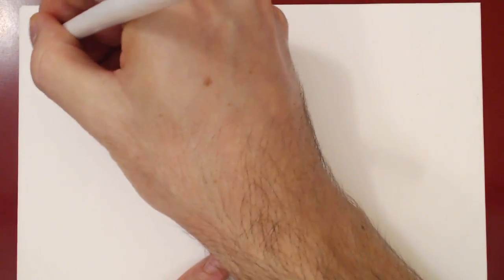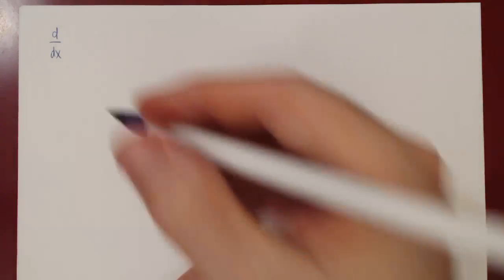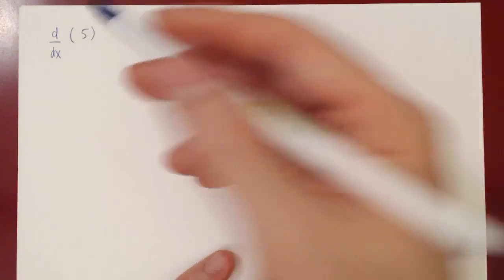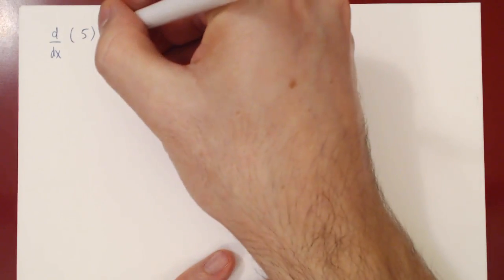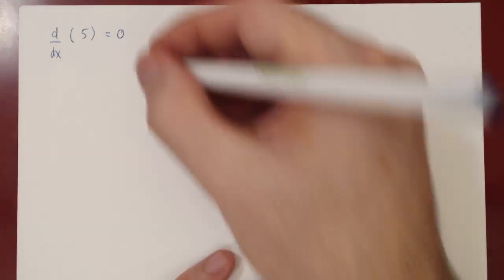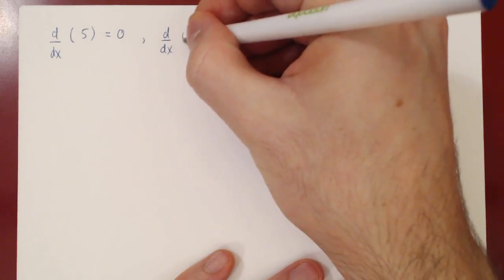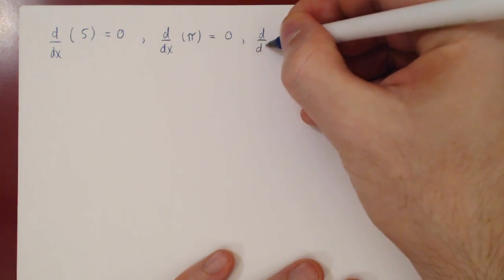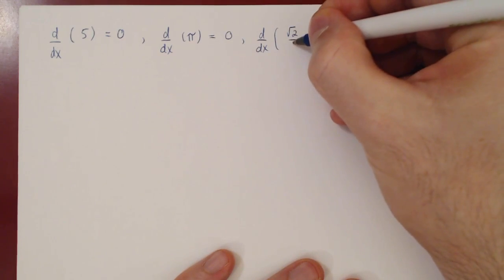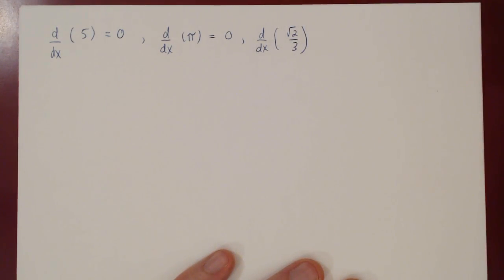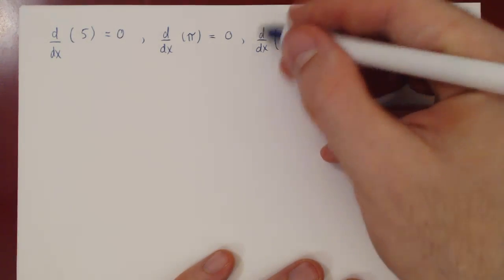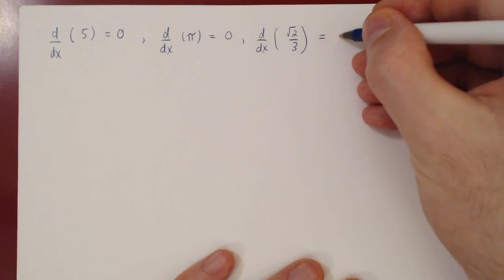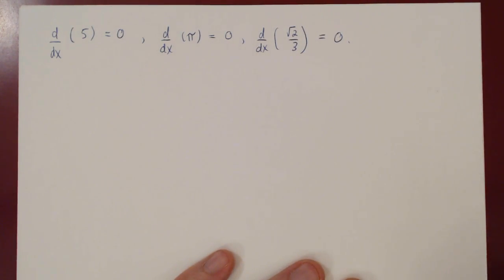Examples of this: what's the derivative with respect to x of 5? Well, y equals 5 is a horizontal line, the slope is 0, the derivative is the slope, so the derivative of 5 is 0. What's the derivative of π? Same thing — π is a constant, the slope of a constant function is 0, hence the derivative is 0. What's the derivative of √2 over 3? Same thing — √2 over 3 is a constant function, it is a horizontal line, it has a slope of 0, hence the derivative is 0. That's the constant rule: the derivative of a constant is always 0.